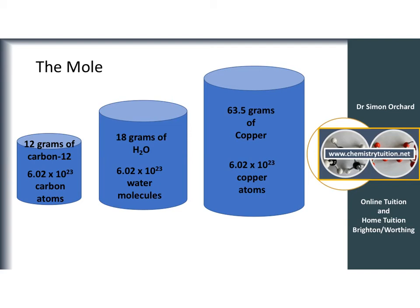You can have a mole of anything — it's just a very big number, basically six followed by 23 zeros. A mole of spoons, a mole of houses, a mole of people — it doesn't matter. If I say I've got a mole of smarties, that means 6×10²³ smarties. When you weigh out the relative atomic mass or relative molecular mass of something, you have that number of particles.